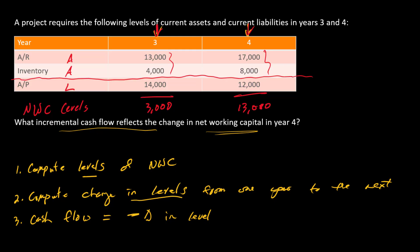We've computed the levels. The second step is to compute the change in levels. From year three to year four, the change in net working capital in year four equals 13 thousand minus 3 thousand, or plus 10 thousand dollars. So net working capital increases.